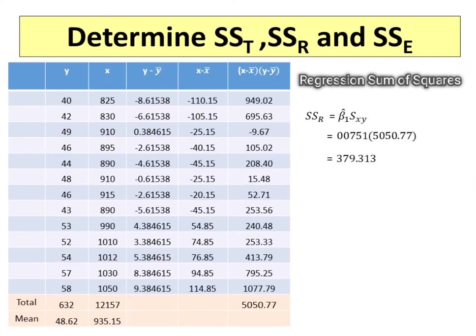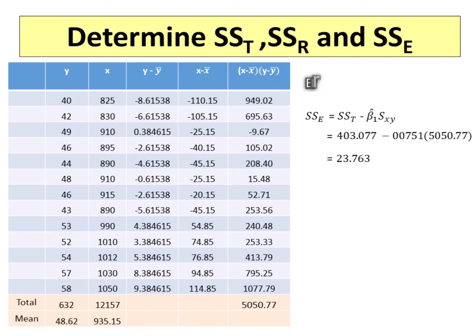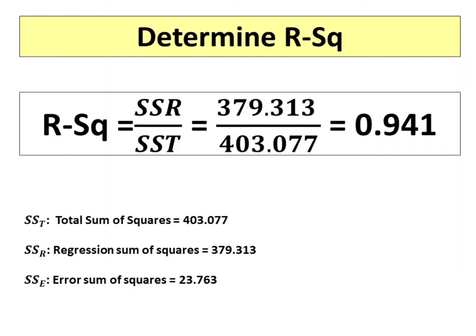Next is the regression sum of squares, which is the sum of the differences between the predicted value and the mean of the dependent variable. The value is 379.313. The error sum of squares, or SSE, is the sum of the differences between the observed value and the predicted value. SSE is the total sum of squares minus the regression sum of squares. The value is 23.763. The R-squared is 0.941, which is obtained by dividing SSR by SST.